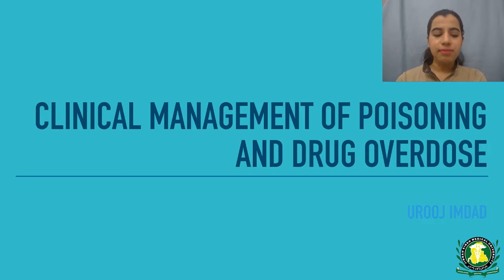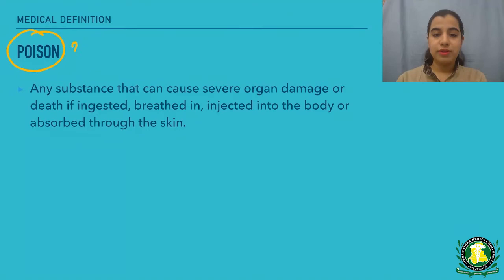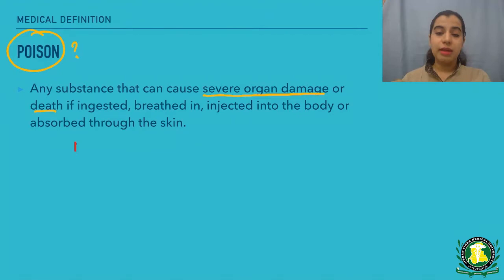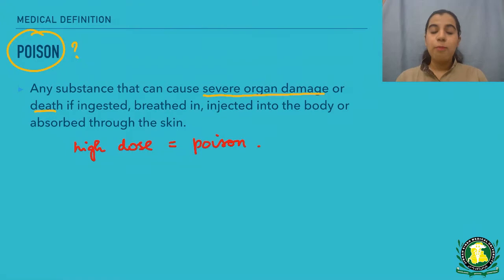To approach this topic, first you need to understand what poison is. Poison could be any substance — it doesn't matter if it's generally safe — but if that substance can cause severe organ damage or death if it is ingested, breathed in, injected into the body, or absorbed through the skin. So in this definition, if you are taking a substance that in normal amounts is very safe but you take more than normal amounts, it could become a poison.